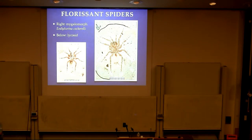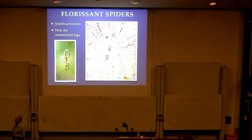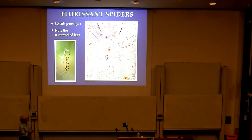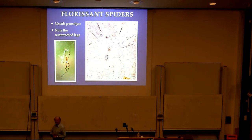These are lycosids — the wolf spiders — and a mygalomorph spider, a kind of ground-living spider. And this is Nephila — a modern genus of the golden orb weavers. There's a modern one for comparison: very long legs, very large. Notice the way the legs are all displayed out. It was pointed out that in Florissant, the fossil spiders nearly all have their legs splayed out rather than curled up.